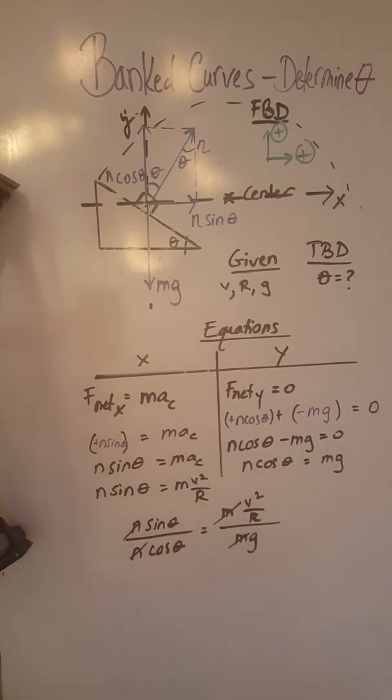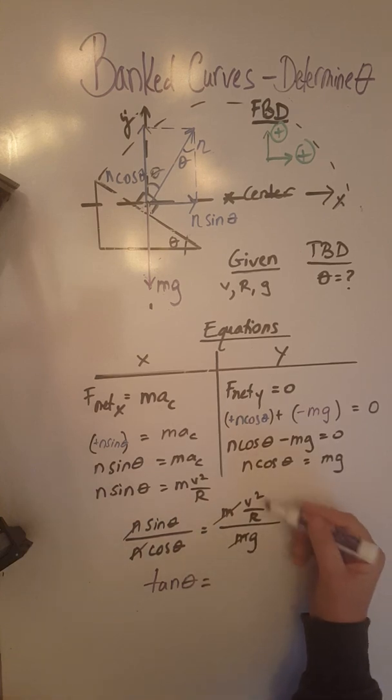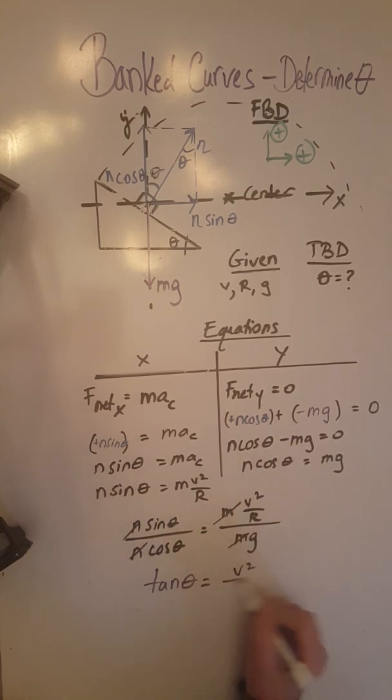Moreover, sine theta over cosine theta becomes tangent theta equals v squared over rg.